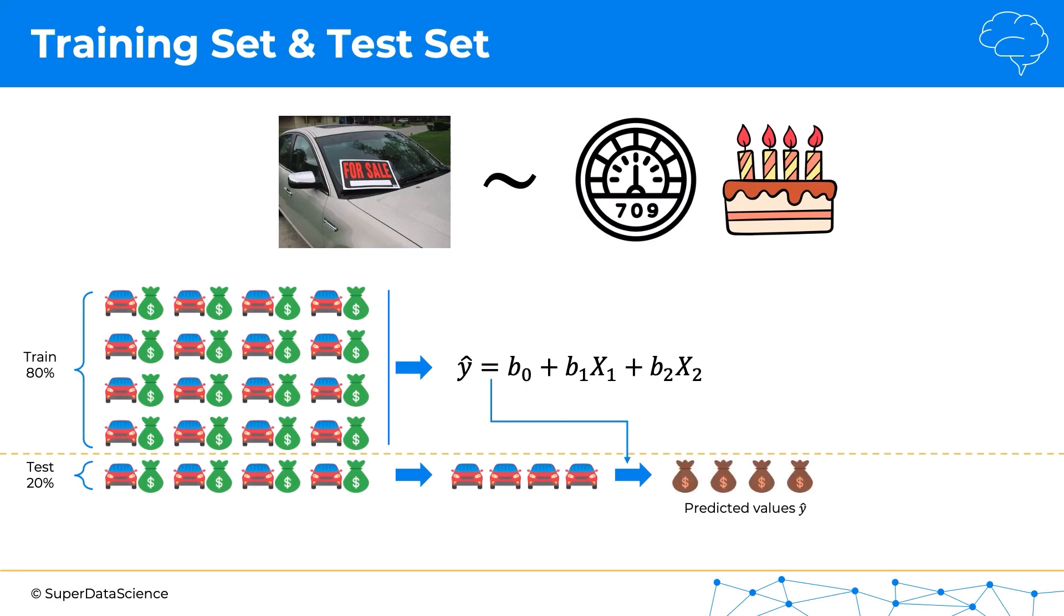But the good news is that because this is something we separated in advance as part of the data that was given to us, we actually know the actual prices. So now we can compare the predicted values which were generated using a model that has never seen these cars before and we can compare that to the actual values that we know what these cars sold for.